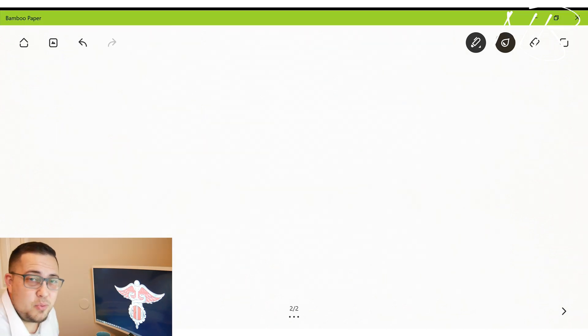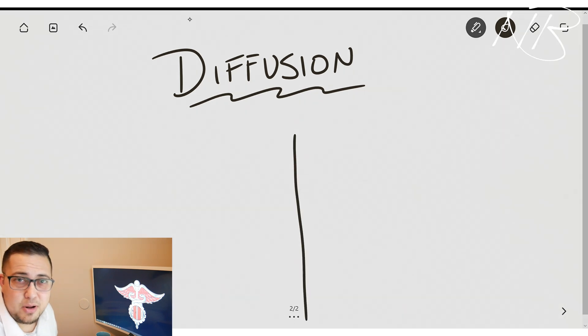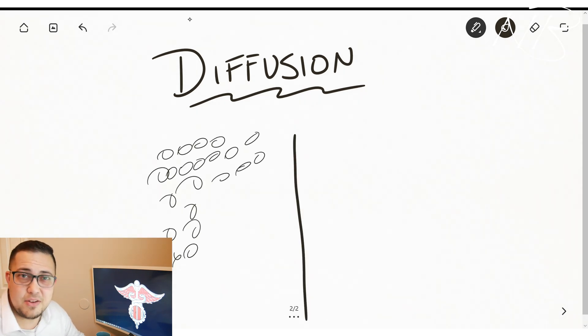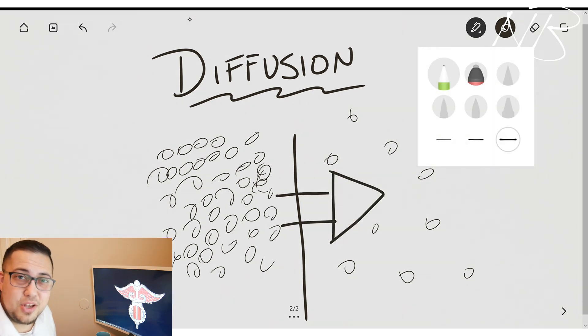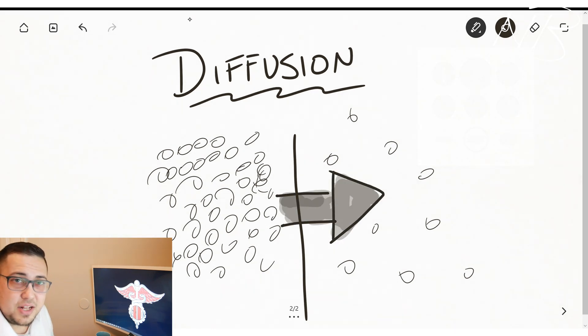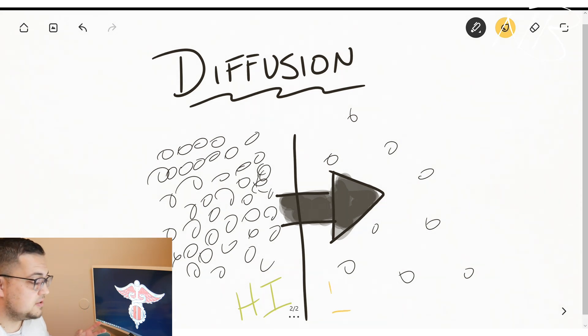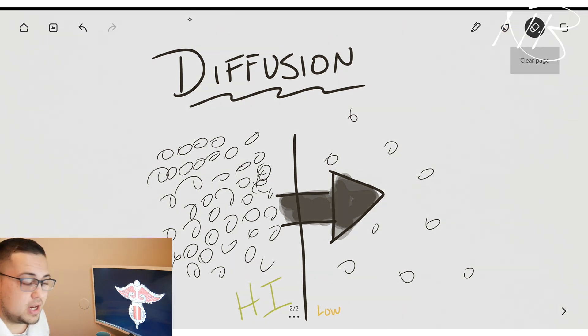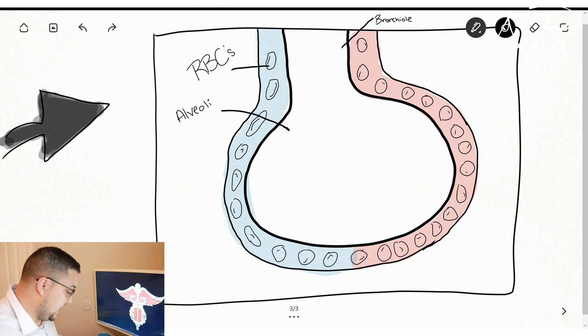Quick side note, it's important to note whenever we have this gas exchange, whenever we have oxygen diffusing across this alveolar capillary membrane into our red blood cells and consequently carbon dioxide diffusing from our red blood cells across this alveolar capillary membrane back into our alveoli, we are doing so via diffusion. And this concept of diffusion is simply solutes, particles, moving from an area of high concentration to an area of low concentration. This could be sodium, potassium, or gases like oxygen and carbon dioxide. Same concept of diffusion applies.